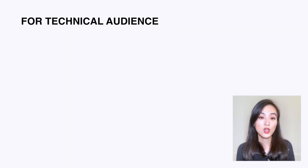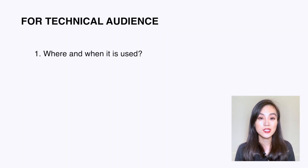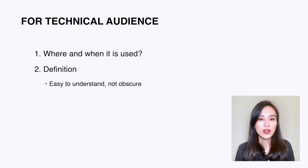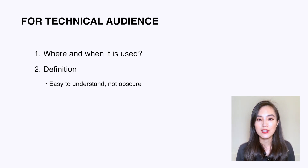I'd like to share a few steps to follow when explaining technical terms to a technical person such as a data scientist. Even if the audience is technical, if your answer is disorganized or obscure it's very hard for people to follow. We can start by talking about where or when a terminology is used, then provide the definition — it should be easy to understand, not obscure like what you see on Wikipedia.